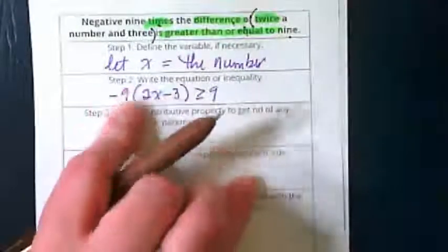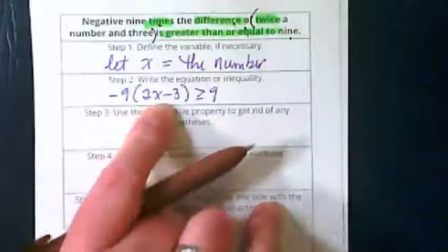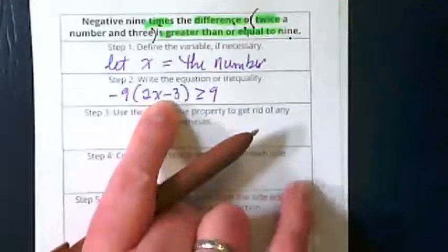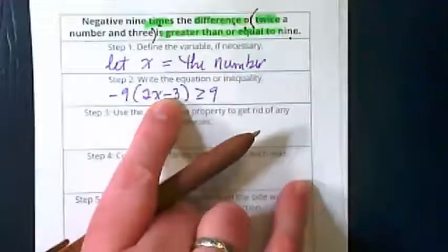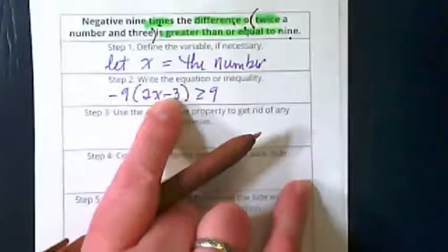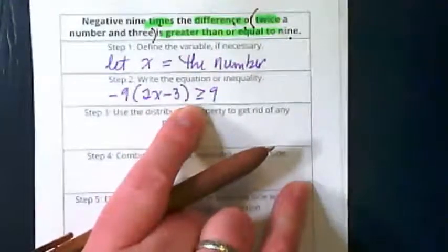All right, so we started off with negative 9 times the difference of, meaning we were subtracting two things, twice a number and 3 is greater than or equal to 9.